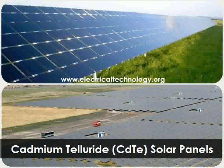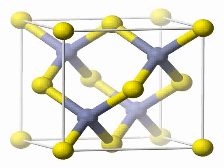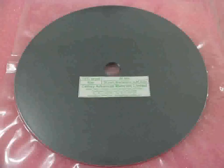CdTe doped with chlorine is used as a radiation detector for X-rays, gamma rays, beta particles, and alpha particles. CdTe can operate at room temperature, allowing the construction of compact detectors for a wide variety of applications in nuclear spectroscopy.